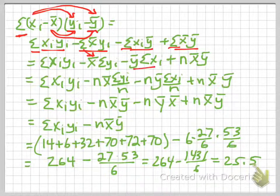Then we have y-bar times the summation of xi, and then the summation of x-bar y-bar is just n times x-bar y-bar, because x-bar and y-bar are constants.